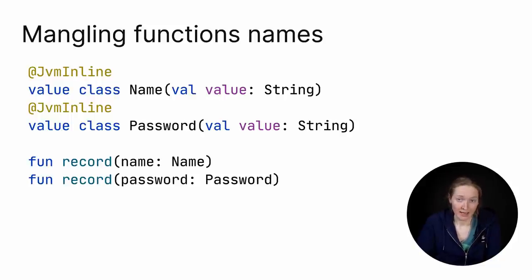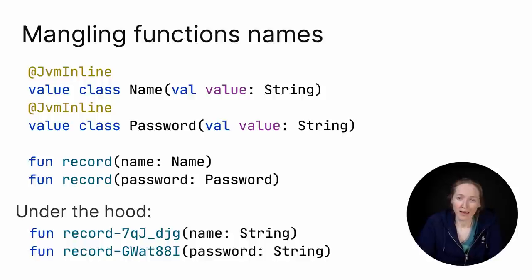Like in this example, we have two different record functions taking name and password as parameters. Without mangling, they would have the same JVM signature in the bytecode, and such code won't compile.